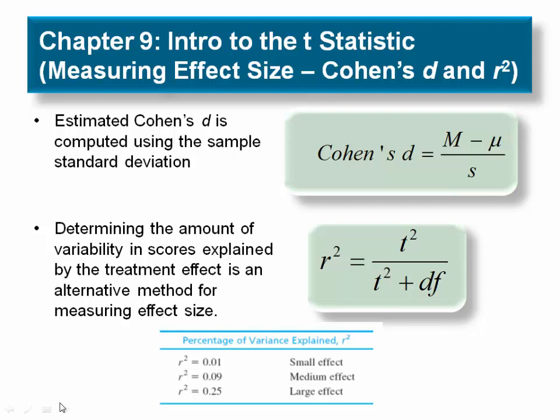Cohen's d and calculating r-squared allows a researcher to calculate the magnitude of the treatment effect and to get a sense of the practical significance of the test. Another key point to make about measures of effect size is that they are not influenced by sample size.